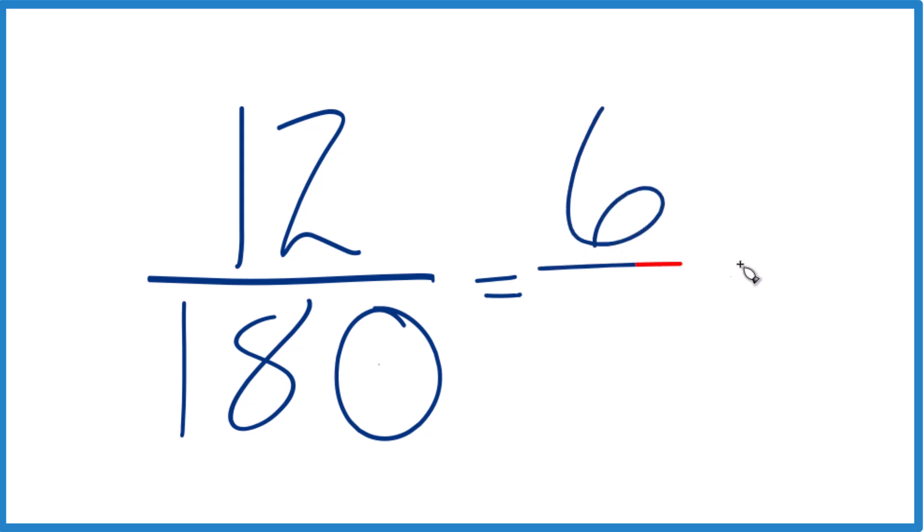12 divided by 2 is 6, and then 180 divided by 2, that's 90.